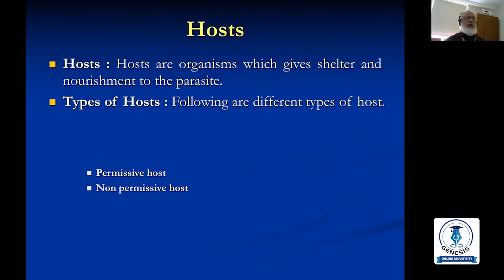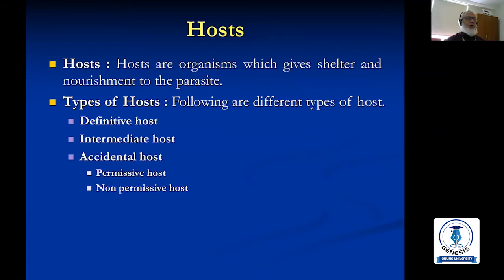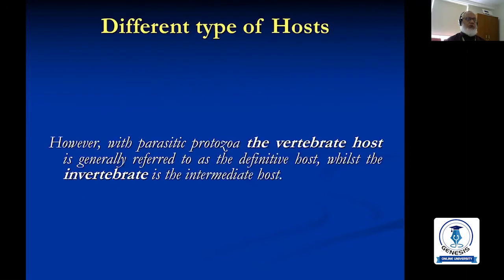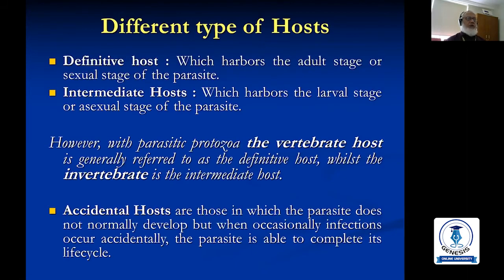Hosts are the organisms which give shelter and nourishment to the parasite. There are different types of hosts: definitive hosts, intermediate hosts, and accidental hosts. Accidental hosts may again be permissive or non-permissive. There are also paratonic hosts and reservoir hosts. Definitive hosts are those which harbor the adult stage or sexual stage of the parasite.